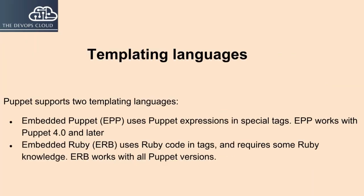Puppet supports two templating languages. Embedded Puppet, or EPP, uses Puppet expressions in special tags and works with Puppet 4 and later. Embedded Ruby, or ERB, uses Ruby code in tags, requires some Ruby knowledge, and works with all Puppet versions.